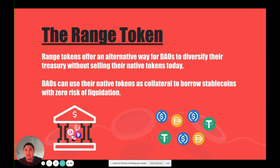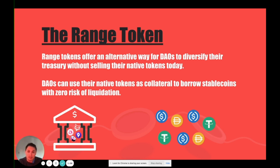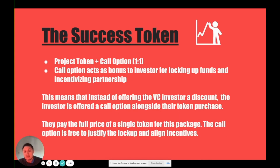The range token is a treasury diversification tool that allows a DAO to borrow against their balance sheet in their native token and raise other types of assets, such as stable coins or other project tokens. The benefit of the range token is a way to enable teams to borrow against their current balance sheet without the risk of liquidation.